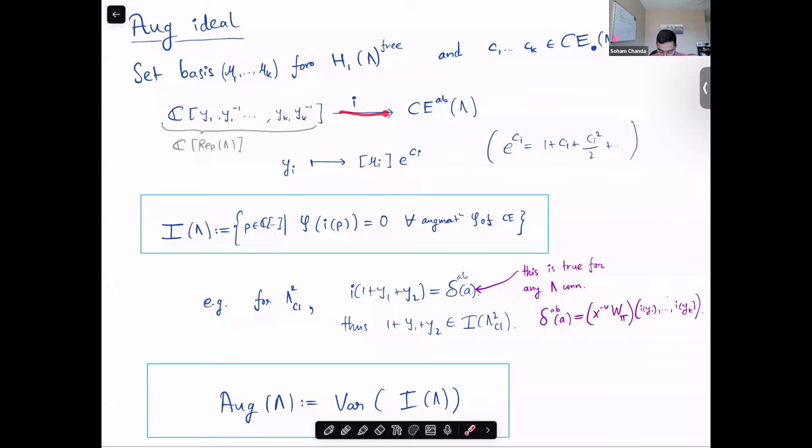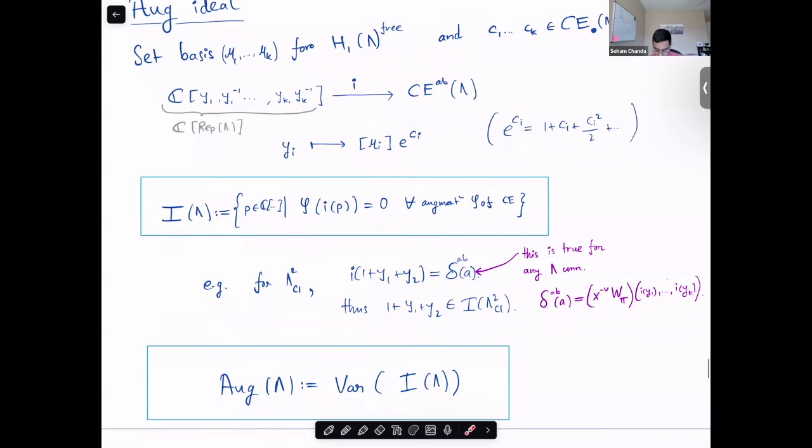The augmentation ideal is just the set of all polynomials, such that if you follow it through in the graded abelianization, the image vanishes for every augmentation of the Chekanovic-Eliashberg algebra. So, basically, this ideal is just the set of relations on these types of elements in the Chekanovic-Eliashberg algebra, which vanish under every augmentation.